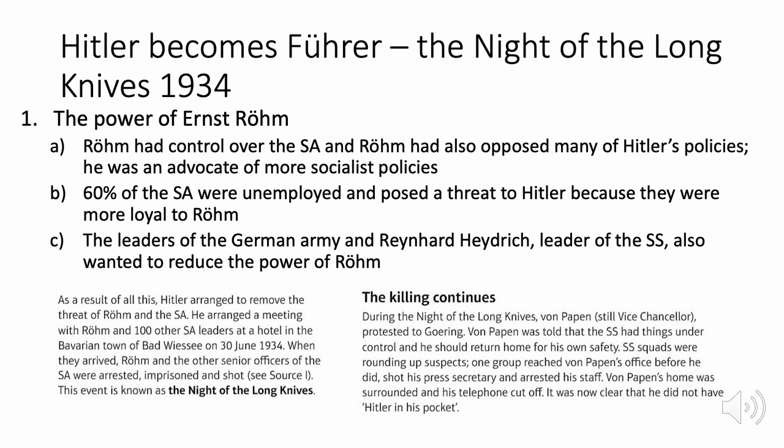Hitler arranged a meeting with Röhm and other stormtrooper officers at a hotel, then arrested, imprisoned, and shot Röhm and other senior officers — known as the Night of the Long Knives. Von Papen was told by the SS to return home for his own safety, but SS officers then arrived at his office, shot his press secretary, and arrested his staff. Von Papen had lost all his power, and his claim that he had Hitler in his pocket was clearly disproved.